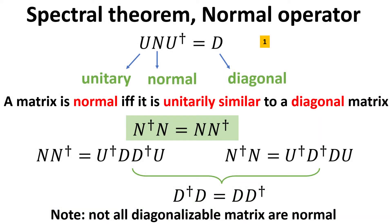Now we are ready to introduce the normal operator, denoted as N. An important result in linear algebra is the spectral theorem, which states that a group of operators known as normal operators N can be unitarily transformed to a diagonal matrix D, as shown in equation 1. Hence, all normal matrices are diagonalizable, but not all diagonalizable matrices are normal. Diagonalization of a matrix is very useful in many applications, allowing for simpler computations. Due to the diagonalization property, a normal matrix satisfies the relation: N dagger times N equals N times N dagger.